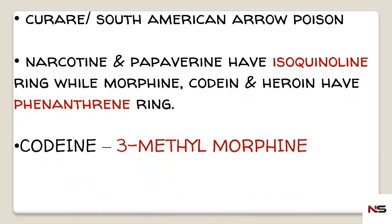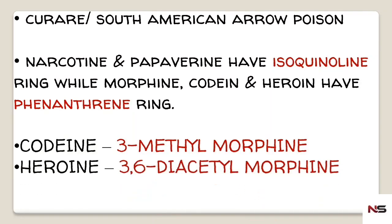Codeine is 3-methyl morphine. Sometimes in exam options, the position of the methyl group may not be mentioned — they may just say methyl morphine — so you can select methyl morphine at that time. Heroin is 3,6-diacetyl morphine. Similarly in options, the position numbers 3 and 6 may not be given — they may say diacetyl morphine only — so you should opt for that answer.